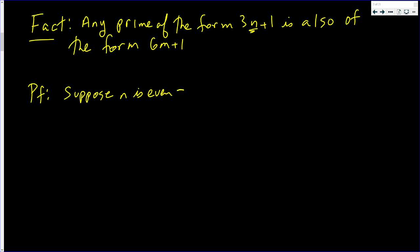Suppose n is even. That implies n is two times m, which implies a number in 3n plus 1 form. 3n plus 1 is of the form 6m plus 1. Doesn't even have to be a prime number. But if the number in the form of 3n plus 1 where n is even is prime, then it's of the form 6m plus 1.